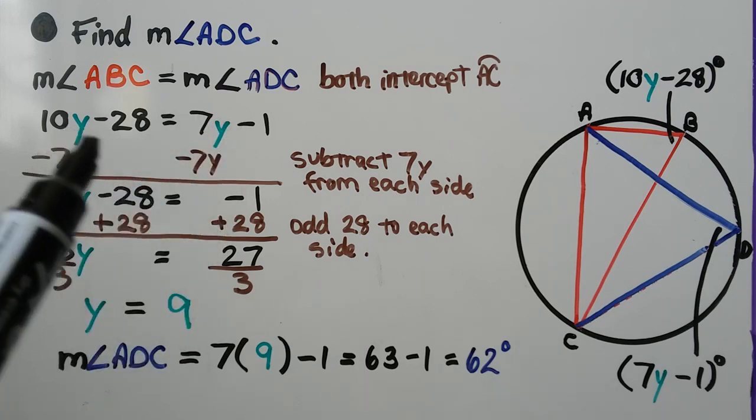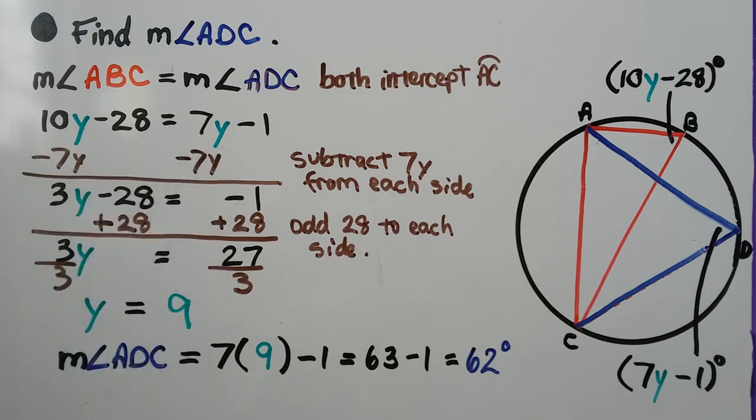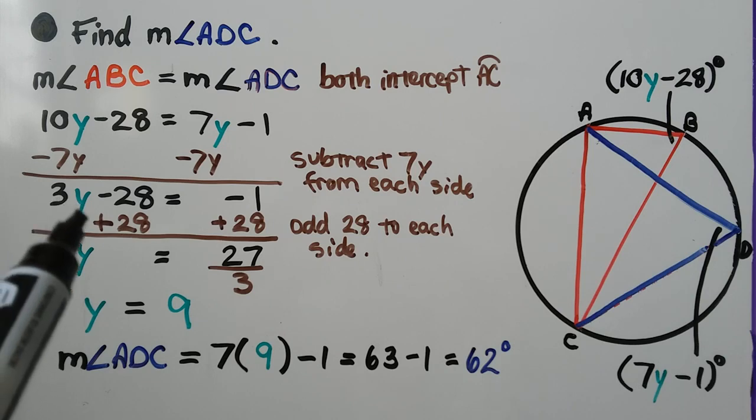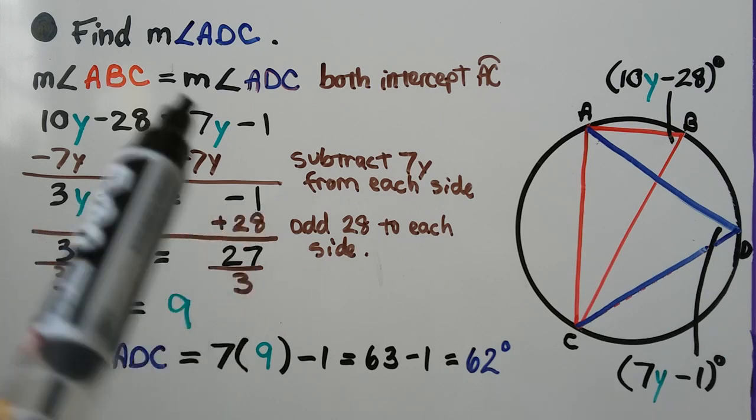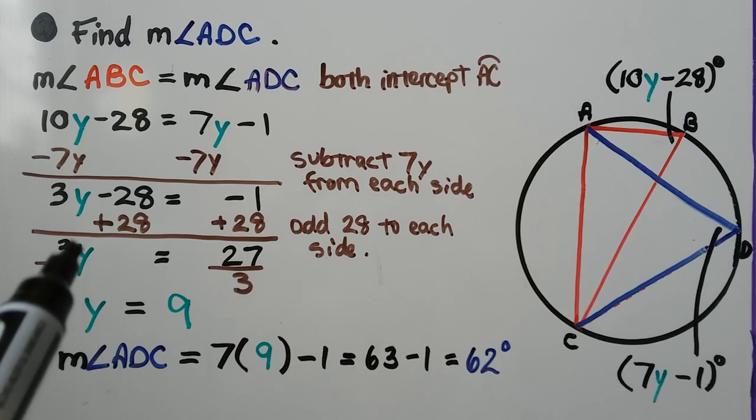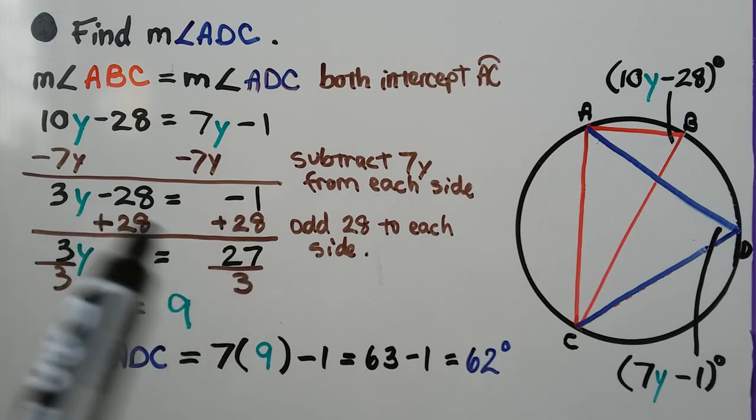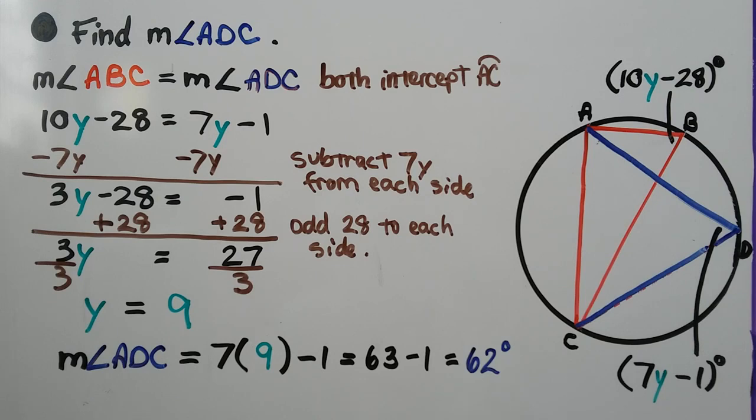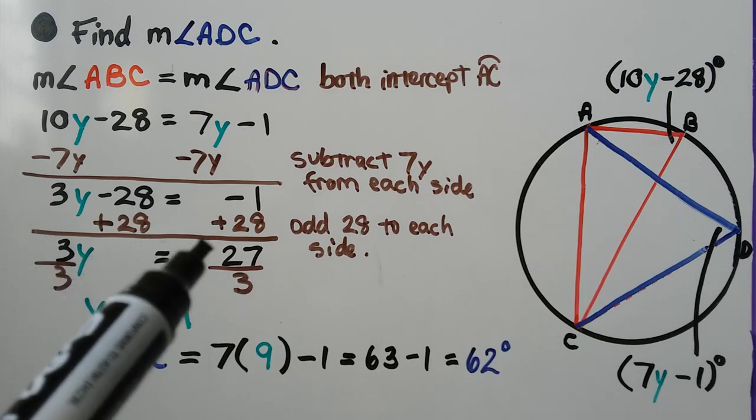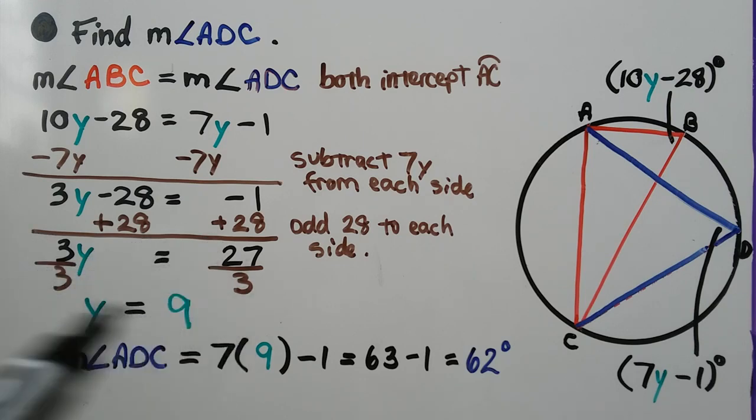We have 10y minus 28 equals 7y minus 1. We can subtract 7y from each side and get 3y minus 28 equals negative 1. Now we can add 28 to each side because we're trying to solve for y, and we get 3y equals 27. We can divide both sides by the coefficient 3. We get y equals 9.